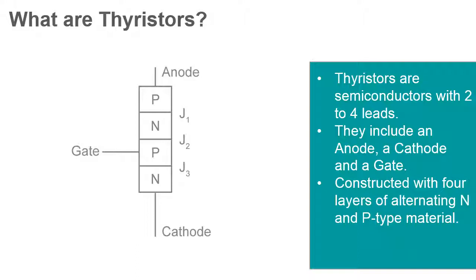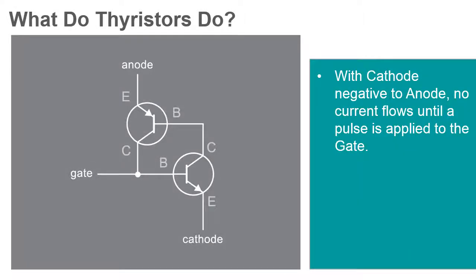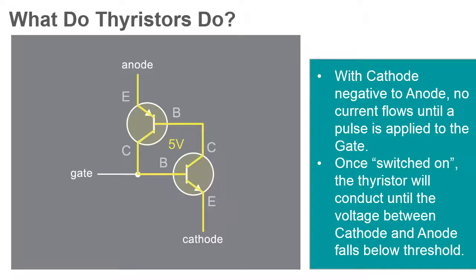Although the SCR is a type of thyristor, there are others as well, including triacs, that are designed specifically to work with alternating current. When the cathode of a thyristor is negatively charged relative to the anode, no current flows until a pulse is applied to the gate. After the pulse, the thyristor will begin to conduct and will continue to conduct until the voltage between the cathode and the anode is reversed or drops below a certain threshold value. This enables large amounts of power to be switched using only a small triggering current or voltage.